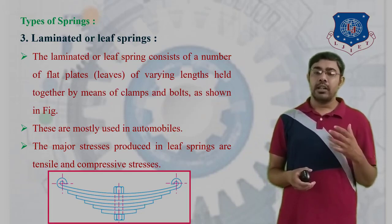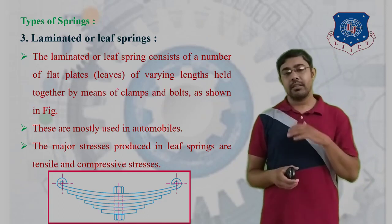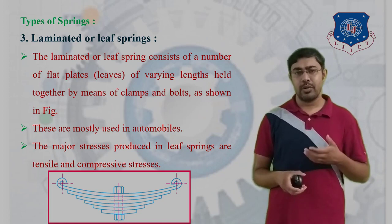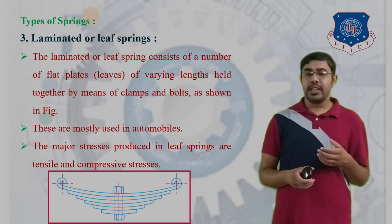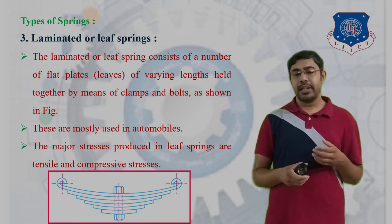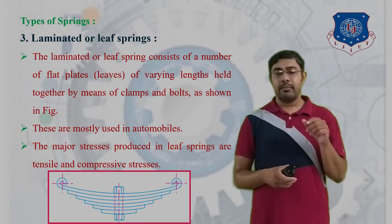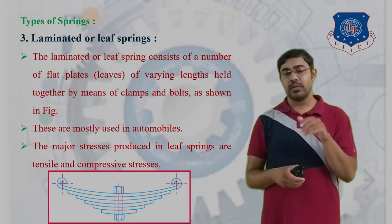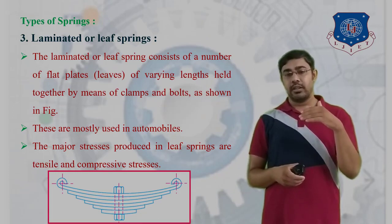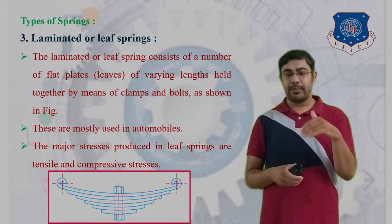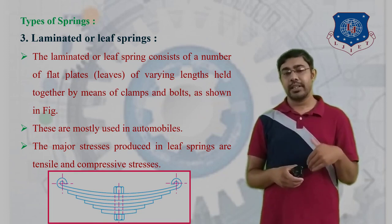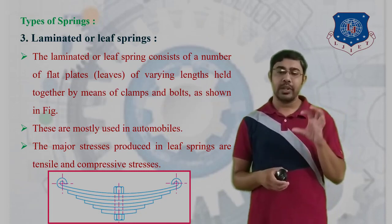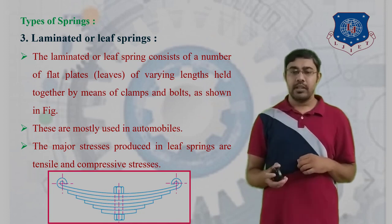The major stress produced in leaf springs is tensile and compressive. In the laminated leaf spring assembly, there is one master leaf, extra full-length leaves, and graduated-length leaves, all clamped together by means of bolts.